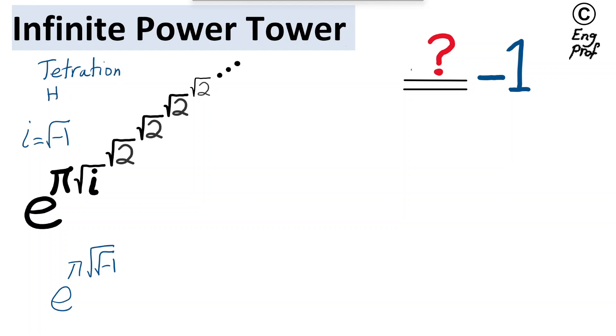The symbol for tetration is this symbol. So I'm going to effectively write it in a more compact fashion. So e to the pi square root of i, raised to the power of square root of 2, tetrated to infinity. Because we are saying, raise square root of 2 to power of itself, infinite times.